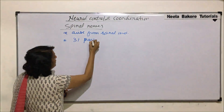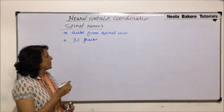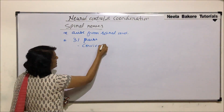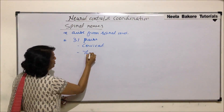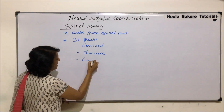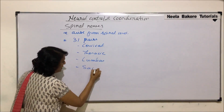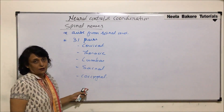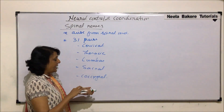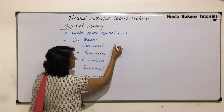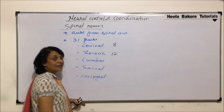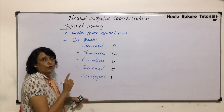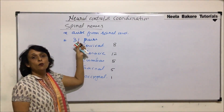These 31 pairs are divided into various zones, which totally depend on the vertebral column. We classify them as cervical spinal nerves, then thoracic spinal nerves, lumbar spinal nerves, sacral, and coccygeal. There are eight spinal nerves from the cervical region, 12 from thoracic, five from lumbar, five from sacral, and only one from the coccygeal — giving us the 31 pairs.